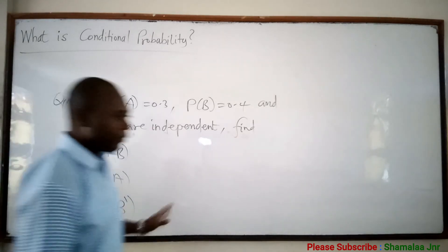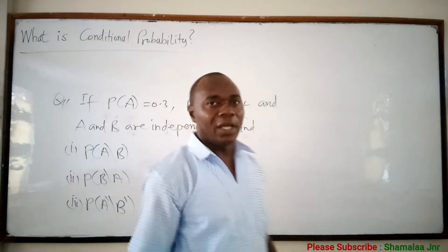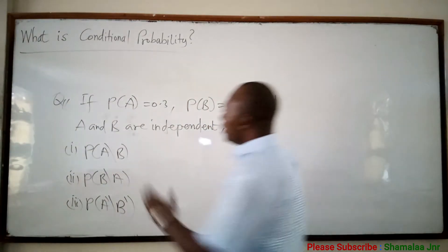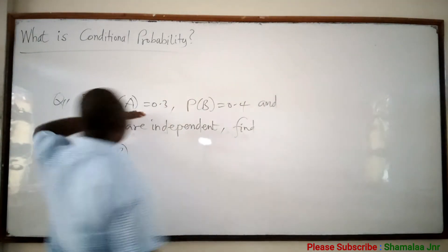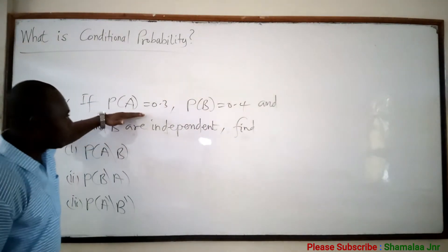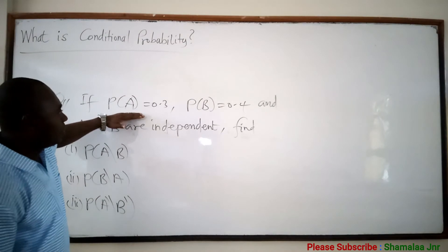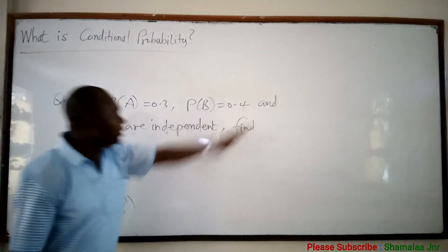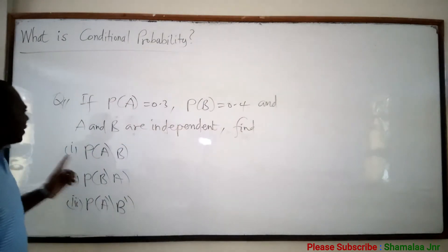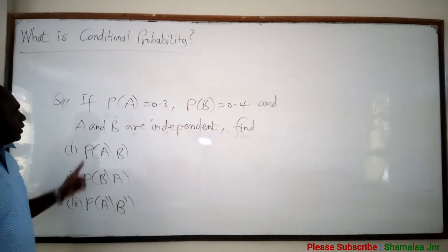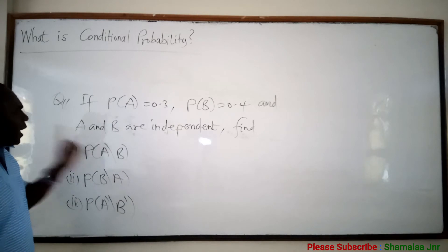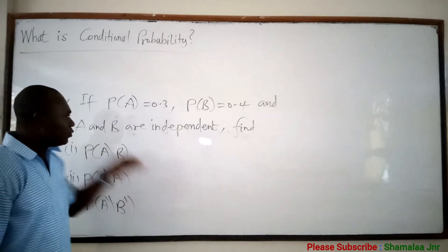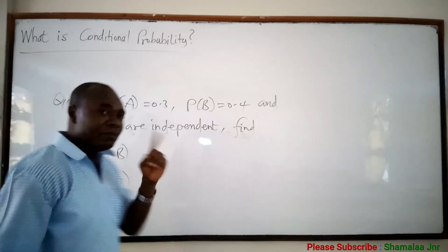So viewers, let's look at the question and try to solve it. The probability of A is 0.3, and the probability of B is 0.4, and we are saying that A and B are independent.